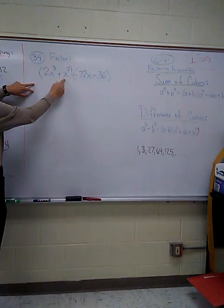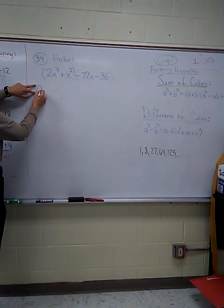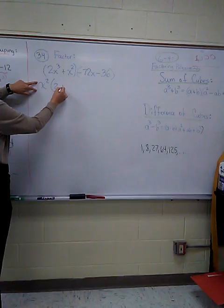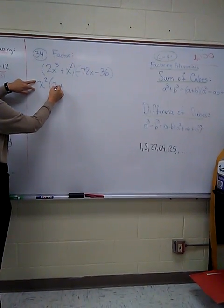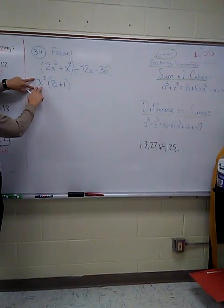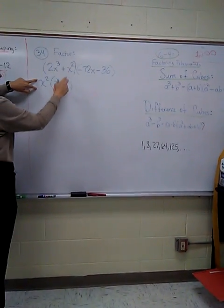So in the first group, 2x cubed plus x squared, we could factor out an x squared term, and you're left with 2x plus 1. x squared times 2x is 2x cubed, and the x squared times 1 is the x squared.